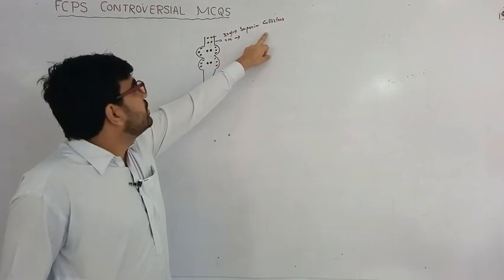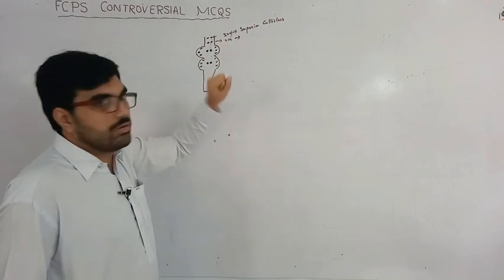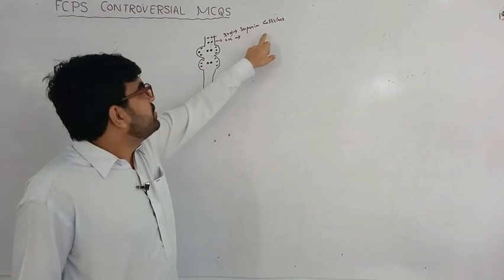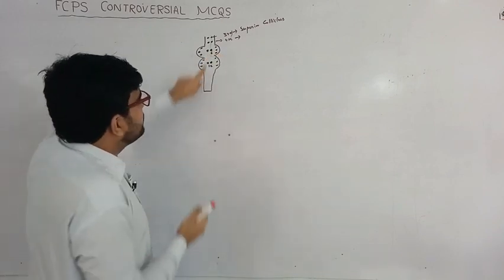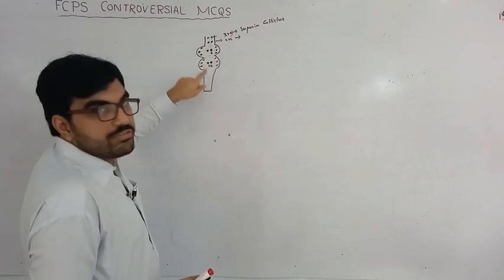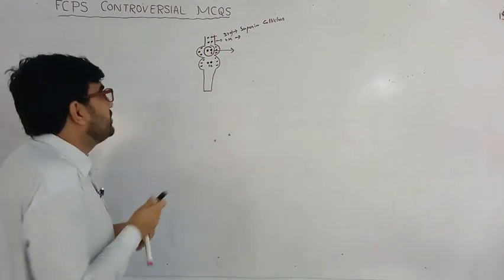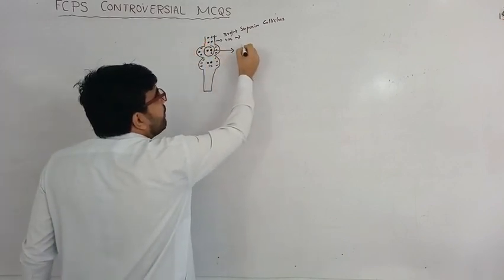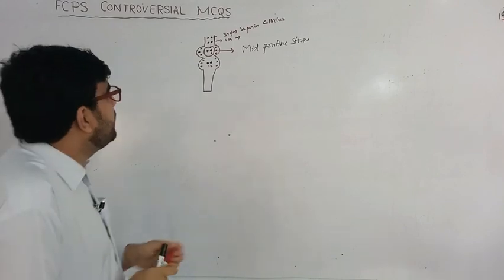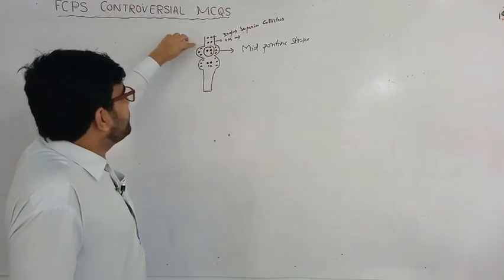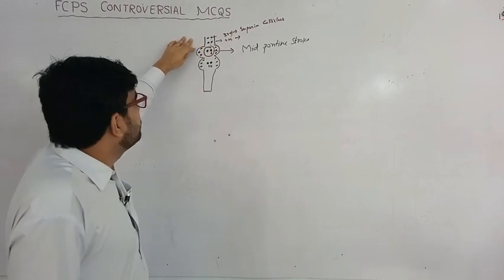They can ask directly: a patient has a lesion at the area of the superior colliculus — which cranial nerve is involved? Third nerve. A lesion at the inferior colliculus — which nerve is involved? Fourth nerve. The sixth nerve and twelfth nerve lie in the midline; the rest of the cranial nerves lie in the periphery. So if you have sixth nerve palsy, this is a mid-pontine stroke, because it lies in the medial region.